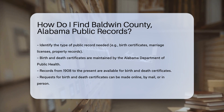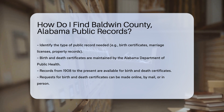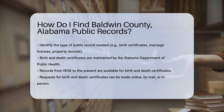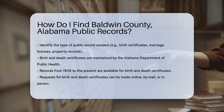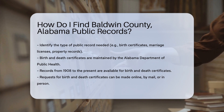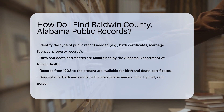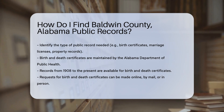First, identify the type of record you need. Public records include birth certificates, marriage licenses, property records, and more. Each type of record is maintained by a specific office.